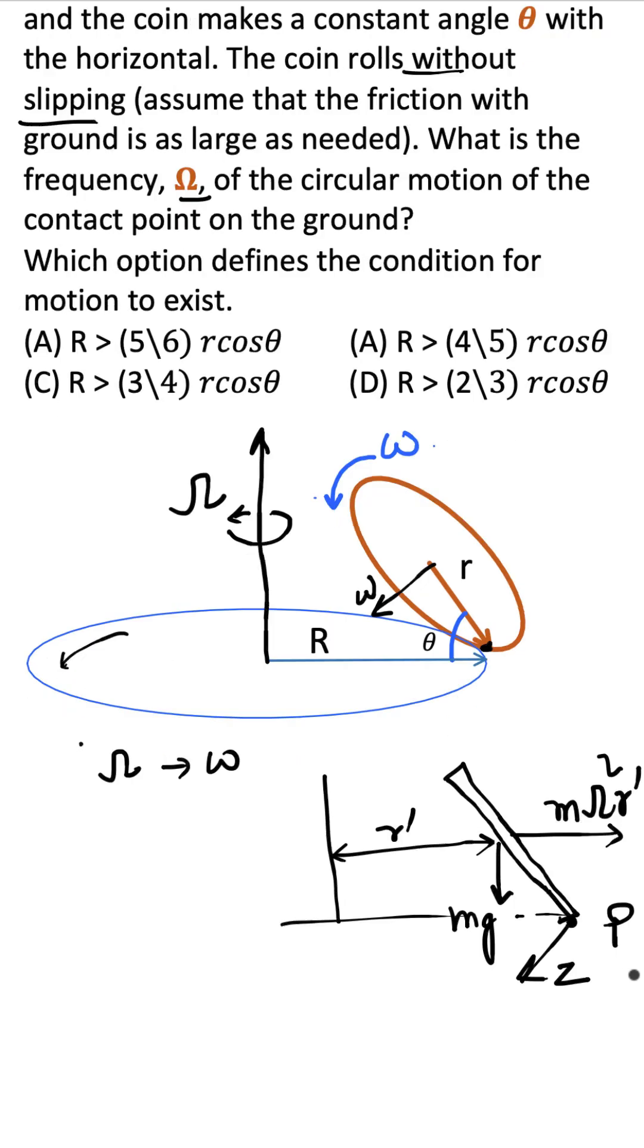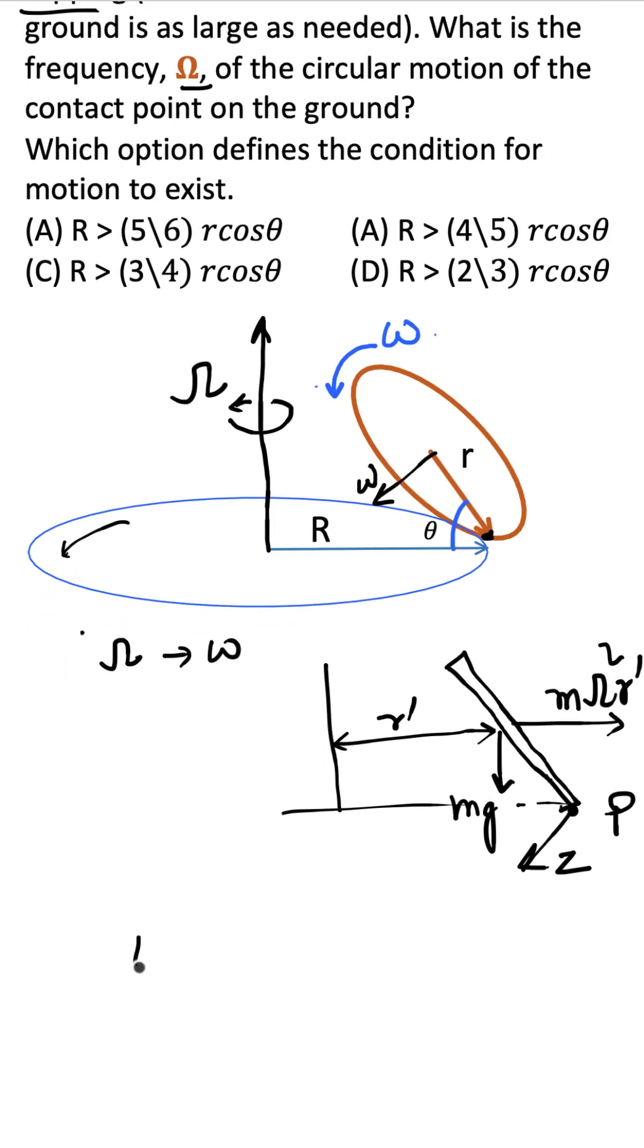Then you need to find out the torque due to the angular momentum, so dL/dt. Just to give you a hint, if you see here the angular momentum is in the two principal axes - let's say i and the other principal axis is j.